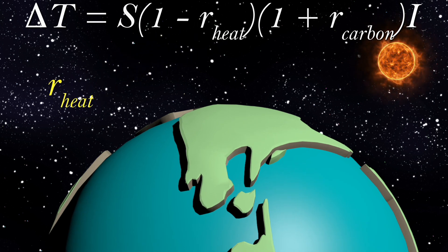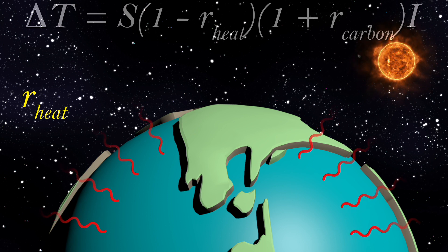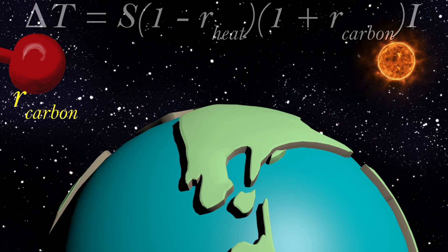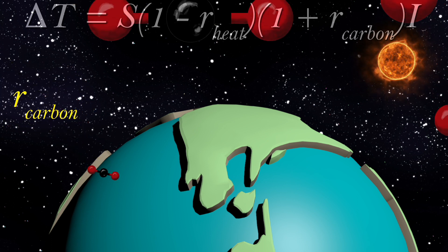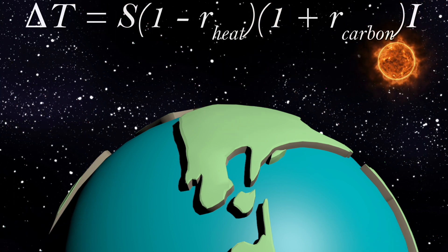The heat term represents how heat is taken up by the ocean interior, reducing the amount of surface warming. The carbon term represents the excess carbon in the atmosphere, which is taken up by both the land and ocean.